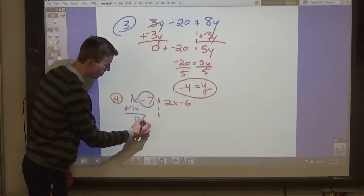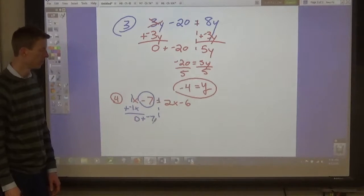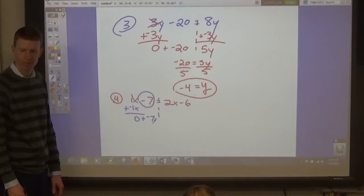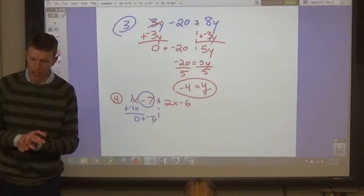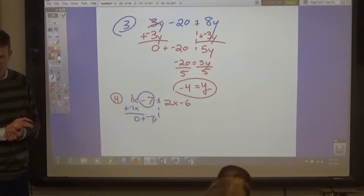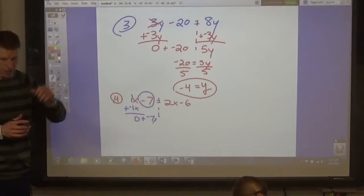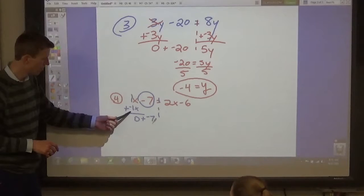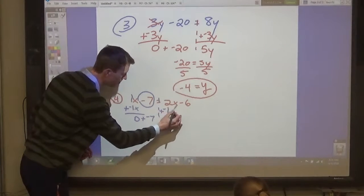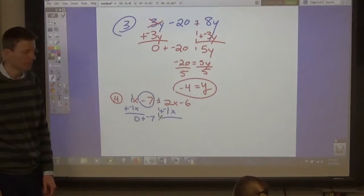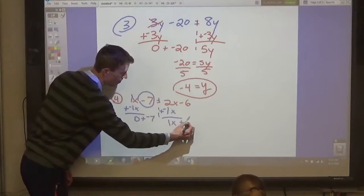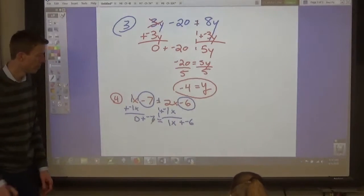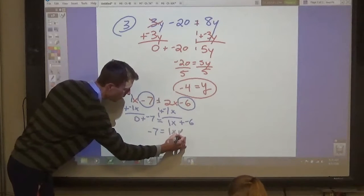Okay. And we still have the negative 7. And then what do we have to do to the right side? What's the most important rule in solving equations? If you do something on the left side, you have to do the same thing on the right side. So, we have to add the negative 1x. Yes, you have to add the exact same thing. So, we still have the negative 6. And this is what we have left in our equation.